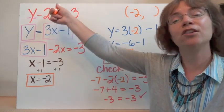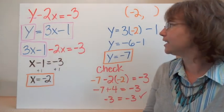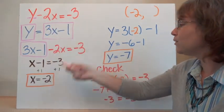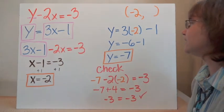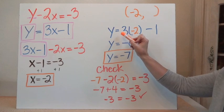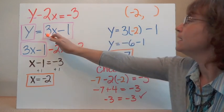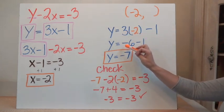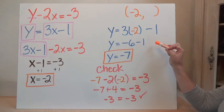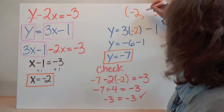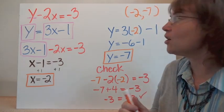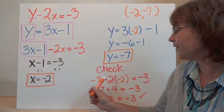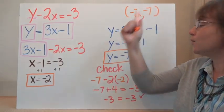Now I need to find my y coordinate. To do that, I can choose either one of these equations to substitute my x equals negative 2 in. I'm going to choose the one already solved for y. I'm going to replace the x in that equation with negative 2 to figure out my y. So I have y equals 3 times negative 2 minus 1. 3 times negative 2 is negative 6, so y equals negative 6 minus 1, which is y equals negative 7. Now I have my y coordinate.